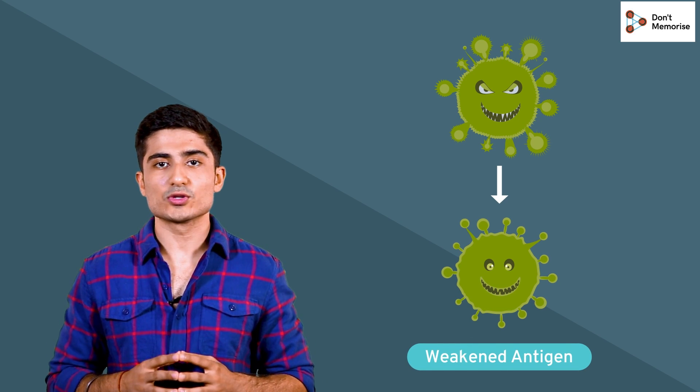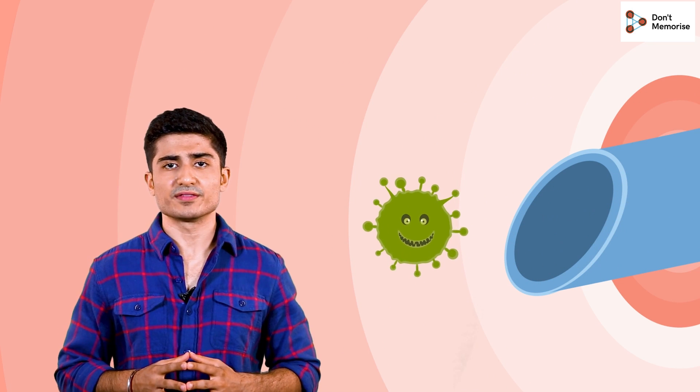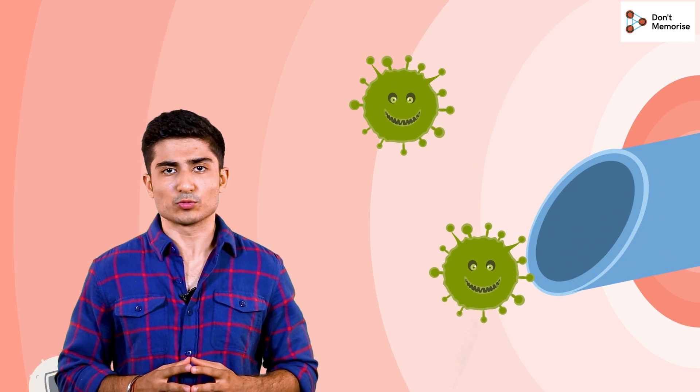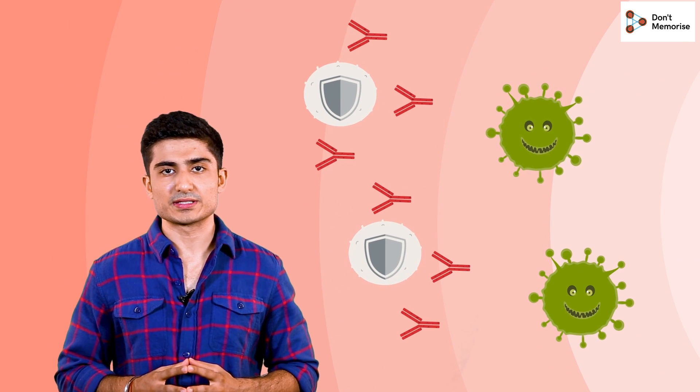The vaccine will trigger the body to produce the antibody to fight it. Your immune system reacts to the vaccine in a similar way that it would if it were being invaded by the disease, by making antibodies. The antibodies destroy the vaccine germs just as they would destroy the disease germs.